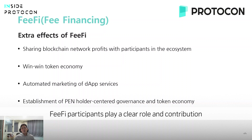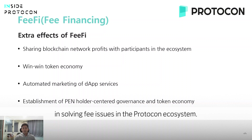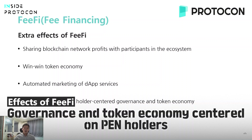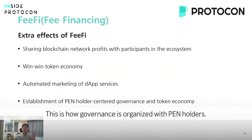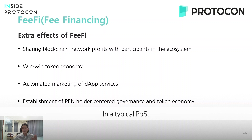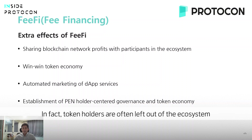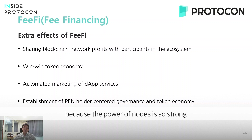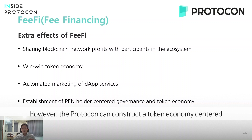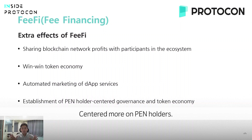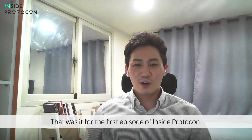Fee-fi participants play a clear role in contributing to solving fee issues in the protocol ecosystem, so they are given membership rights and voting rights that govern the entire Protocon network — this is how governance is organized with pen holders in Protocon. In typical POS, the token economy consists of a structure that monopolizes power, leaving token holders out of the ecosystem because node power is so strong and the majority of profits are taken by nodes. However, Protocon constructs a token economy centered on pen holders, not just node operators.